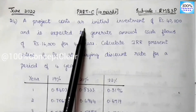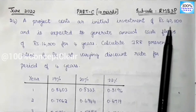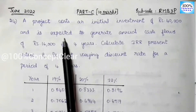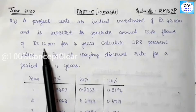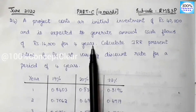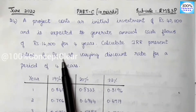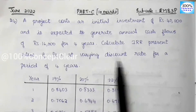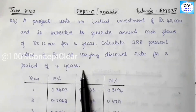A project causes an initial investment of Rs.40,000 and is expected to generate annual cash flows of Rs.16,000 for 4 years. Calculate IRR. The present value of Rs.1 at varying discount rates is given for a period of 4 years.